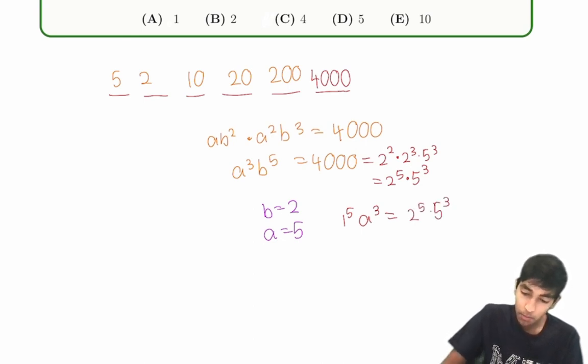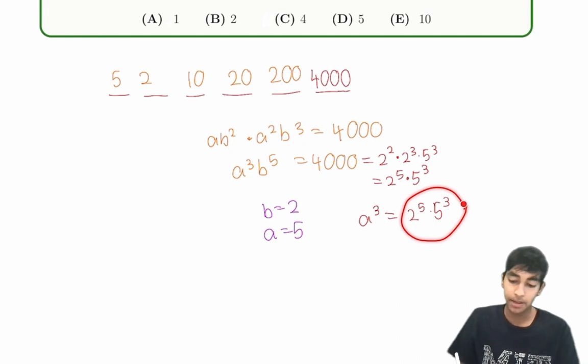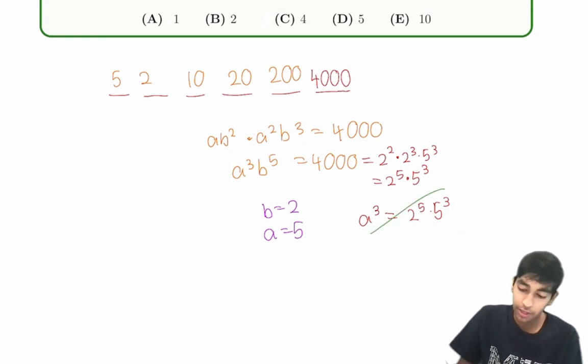But notice that now, because 1 to the 5 is just 1, A cubed, this over here is not a perfect cube, so A cannot be an integer. So therefore, we know that the only possibility happens when B equals 2, A equals 5. And this does work.